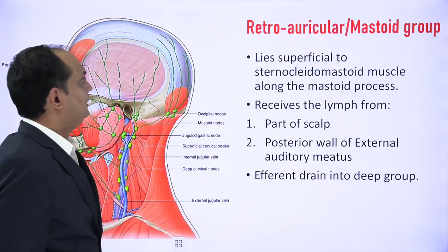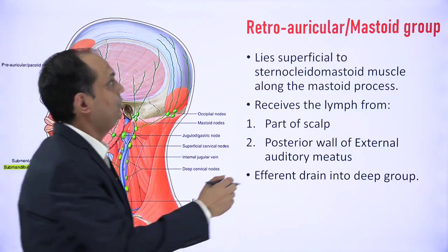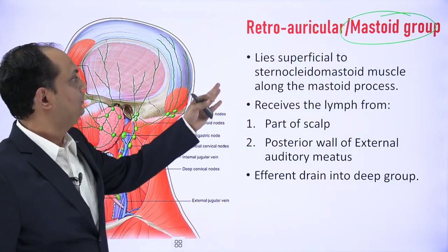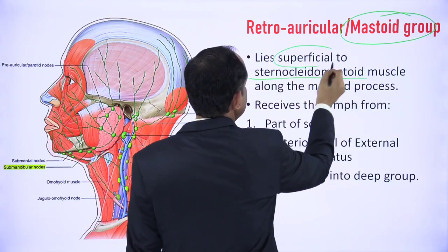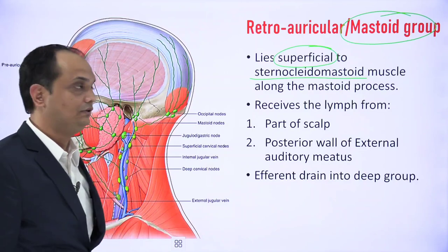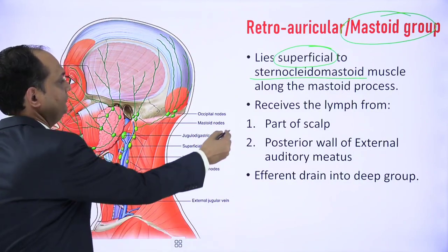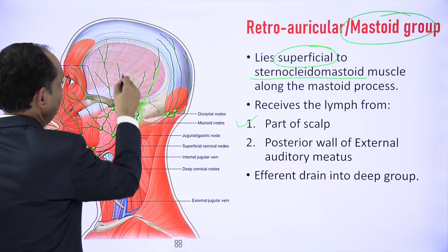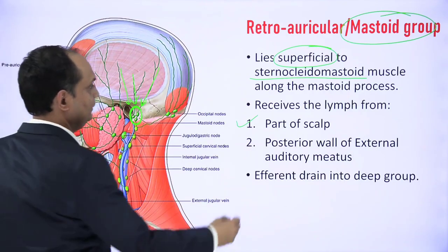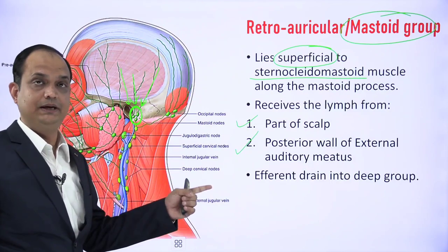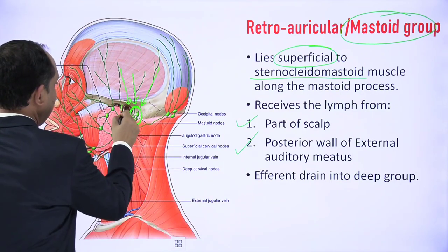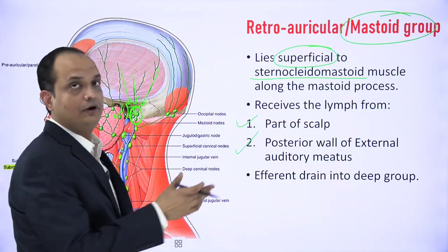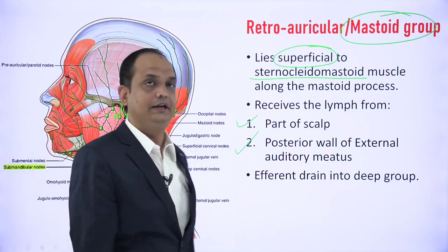Behind the parotid group is the retro-auricular or mastoid group, which lies on the mastoid process, superficial to the sternocleidomastoid muscle. This group drains the adjacent part of the scalp and also receives the posterior wall of the external acoustic meatus. So the anterior wall of the external acoustic meatus drains into parotid, while the posterior wall drains into the mastoid group. Lymph from this group ultimately drains into the deep group.